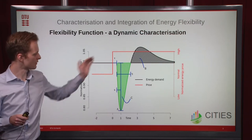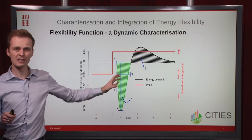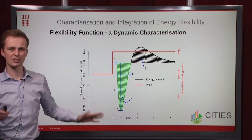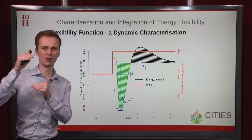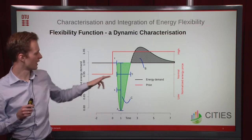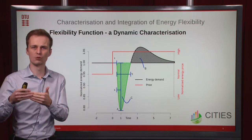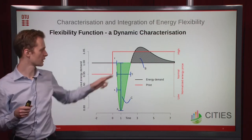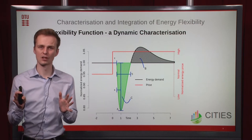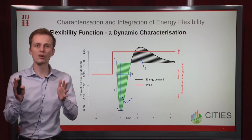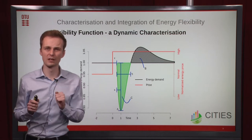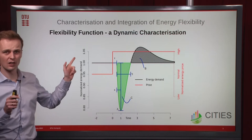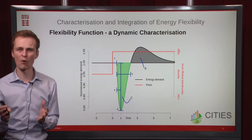In this flexibility function you can identify many characteristics that others have studied individually, but here we have all of them. For example, you could have the total area C — the energy you can move. You could have delta, which is how much you can change the demand at one moment. You could consider eta, the amount of time you can change the demand. You could also look at the rebound effect and the delay. If you don't consider all of them at the same time you don't get the full picture, but using the flexibility function you have a dynamic characterization that incorporates all of them.